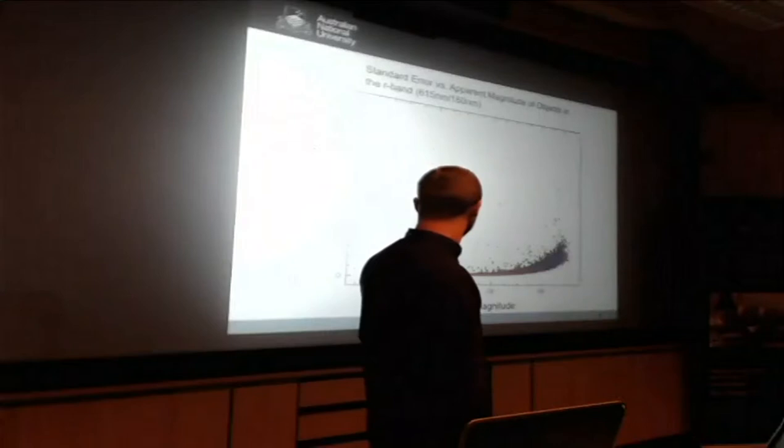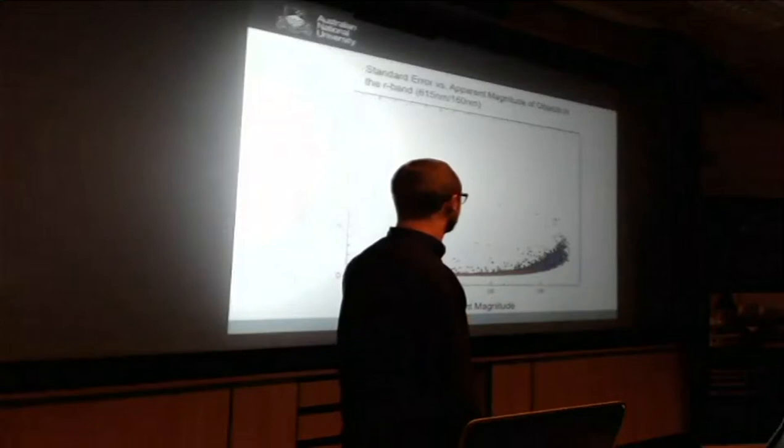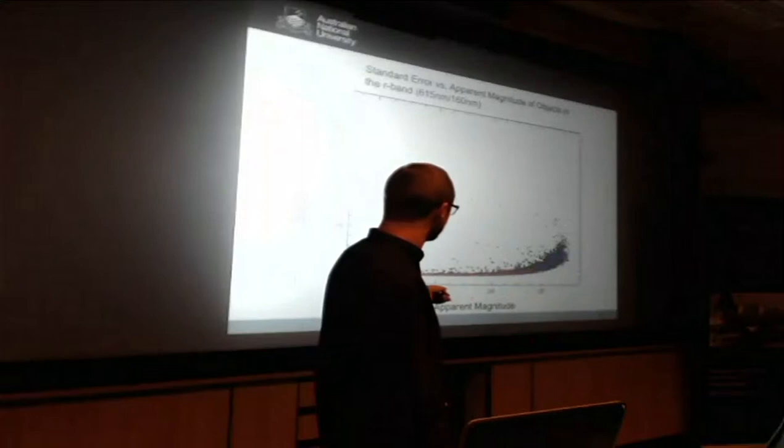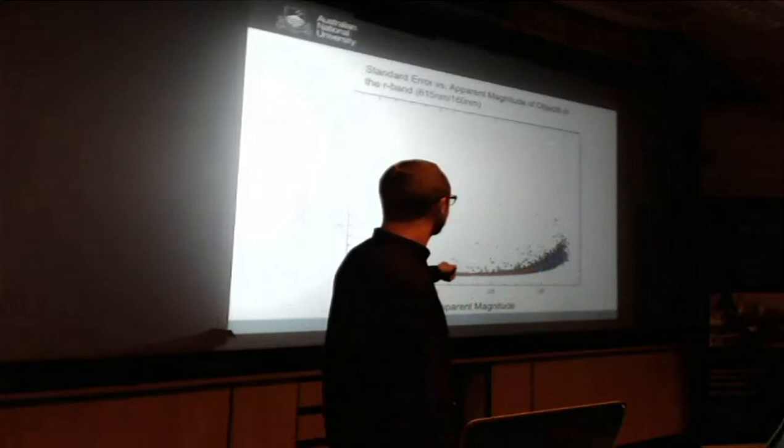The objects that follow this trend here, the red trend, are the objects that aren't varying too much. We've also got the blue dots here. These are the quasars that Sloan had catalogued already. Most of them are in this noisy area. But these ones here are the variable objects.